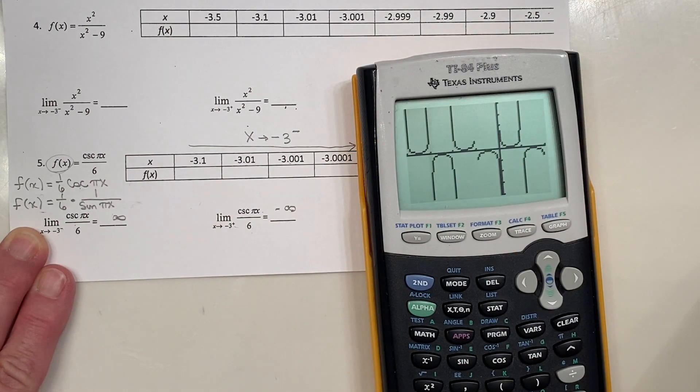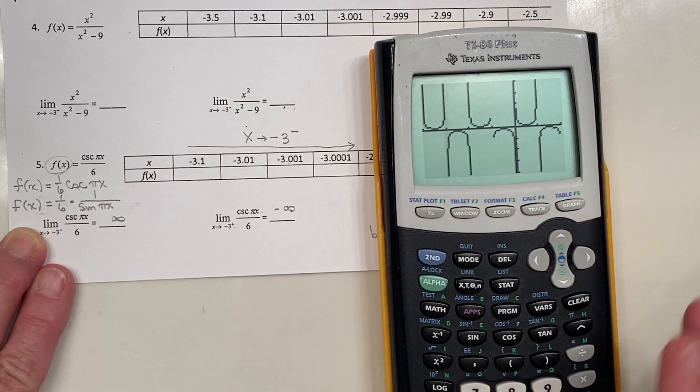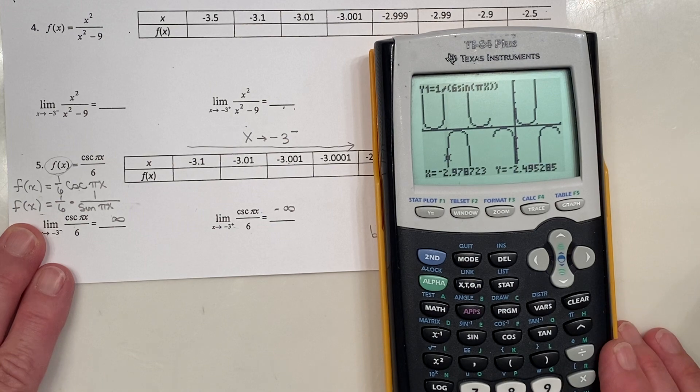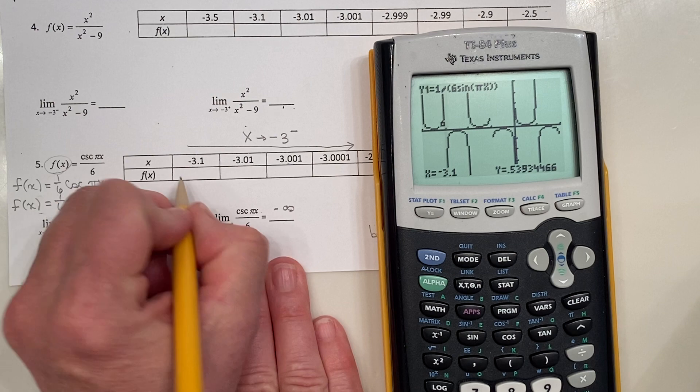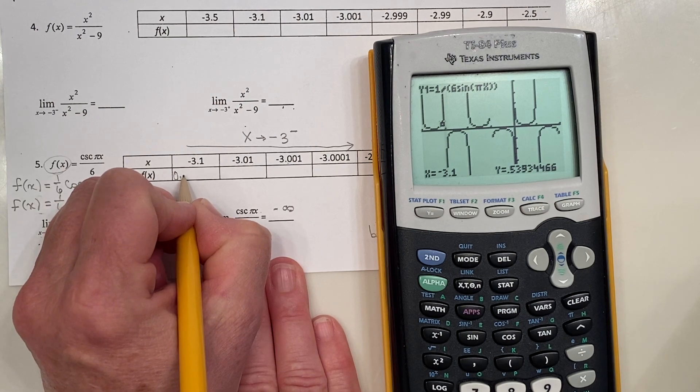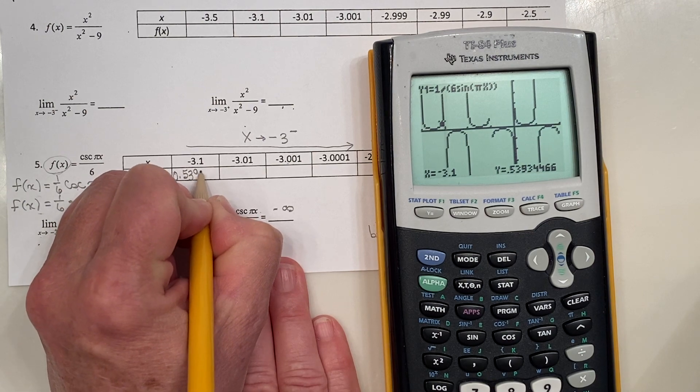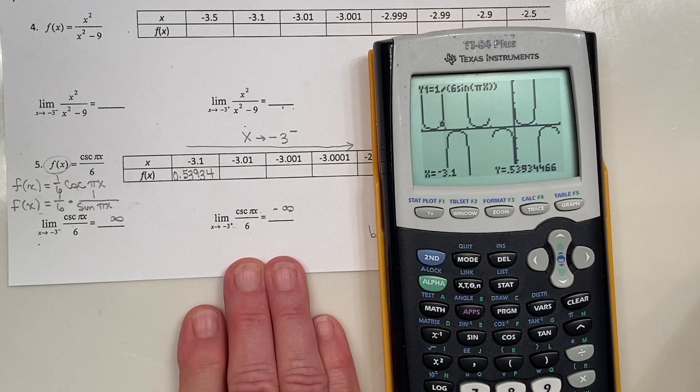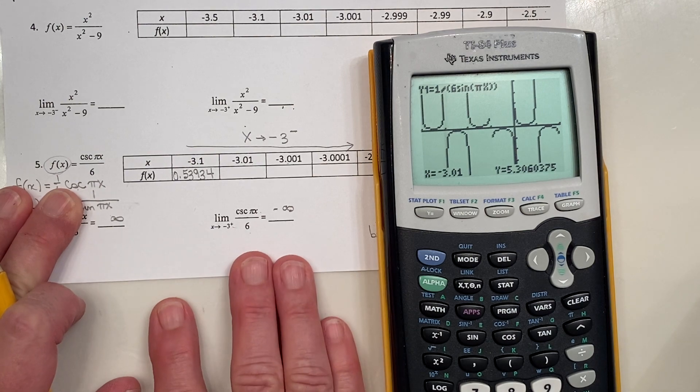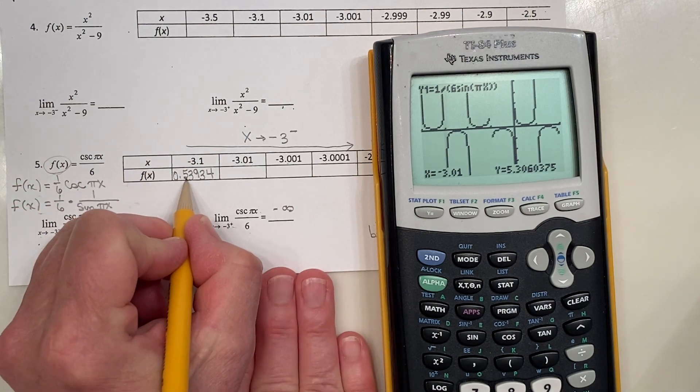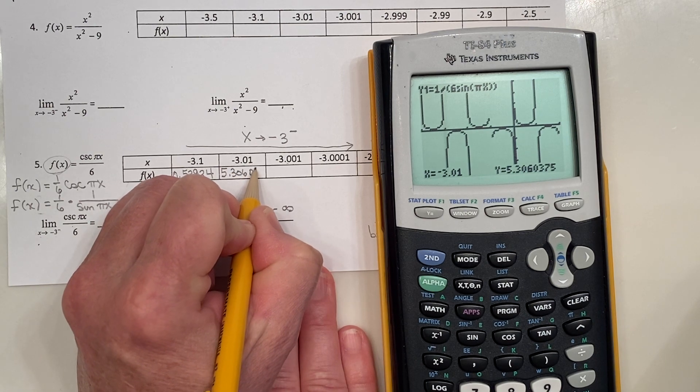So I've got a graph, and so let's just plug things in, or you can go to your table and set it to ask and enter the values you want. I think it's just as easy to hit trace and hit negative 3.1. So it looks like I'm up at 0.53934. Okay, now negative 3.01. Okay, now look, my number went from a half, 0.5, to 5.30603.